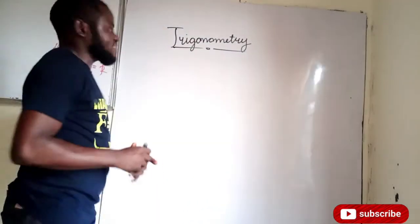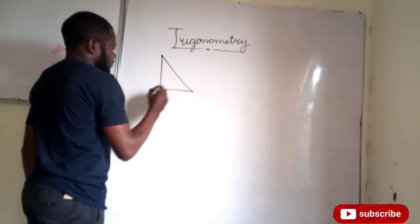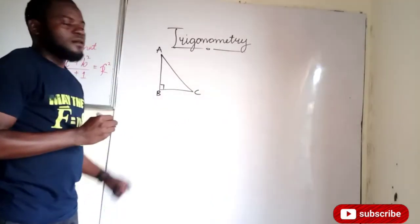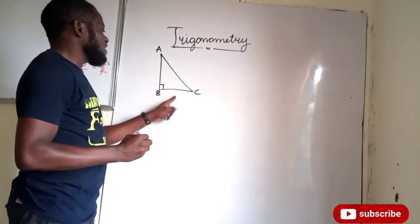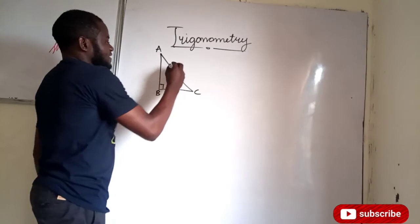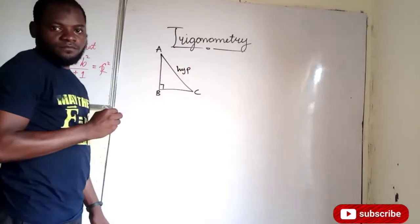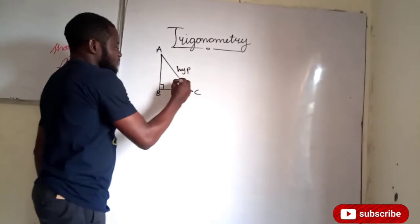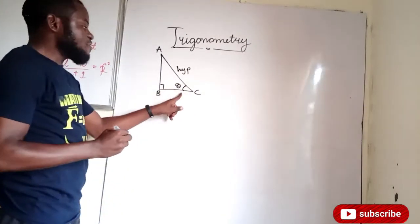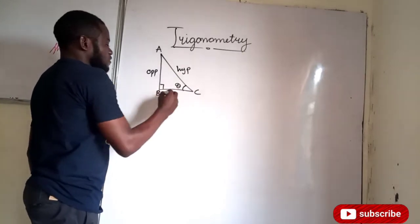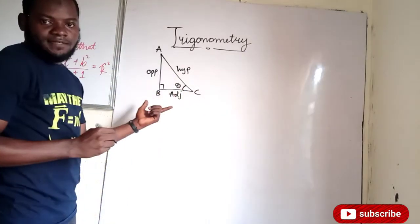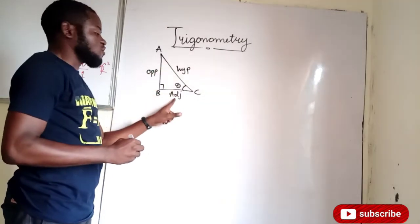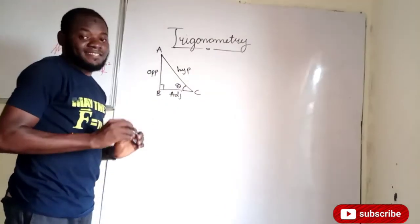Let's take for instance that we have a right angle triangle like this, and this is A, this is B, and this is C. The first thing we need to know is what names are given to the sides of this triangle. Anywhere your 90-degree angle is facing is known as the hypotenuse. We have two other angles: angle A and angle C. If you are considering angle C, anywhere angle C faces is its opposite, and the third side will be its adjacent. If you are considering angle A, anywhere it faces is the opposite of A, and the other side will be its adjacent.